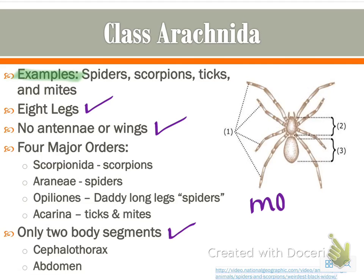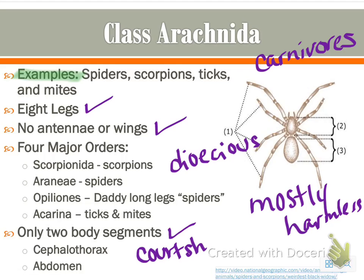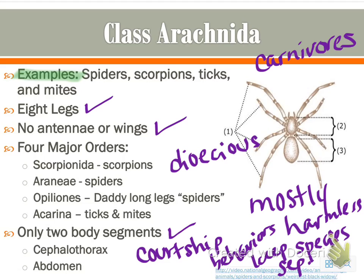Most arachnids are actually harmless, or even beneficial, despite a lot of horror stories about spiders and scorpions. They are carnivores for the most part. They have dioecious reproduction, so there are separate males and females. To keep species separate, they have different courtship behaviors. There are four major orders: scorpions, spiders, daddy-long-legs, and ticks and mites.